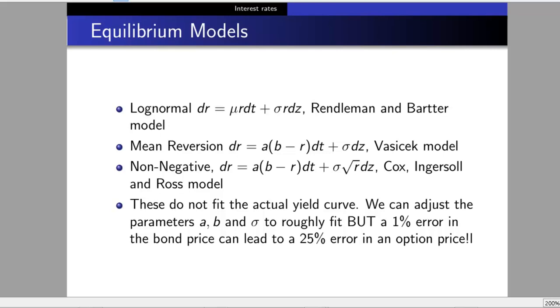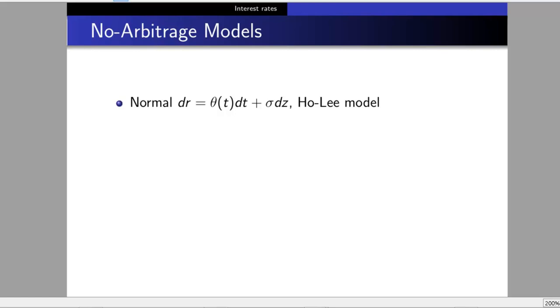A 1% error in bond price can lead to a 25% error in option price. Traders don't have much faith in equilibrium models since they provide arbitrage opportunities—they're close to reality but not exact. This leads to no-arbitrage models, where we feed in the actual yield curve data so there are no arbitrage opportunities.